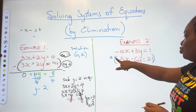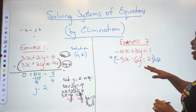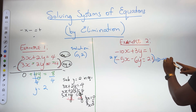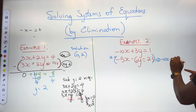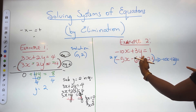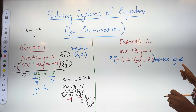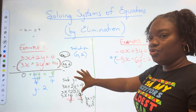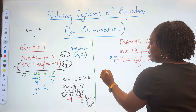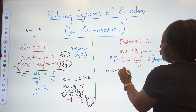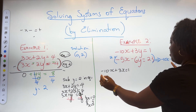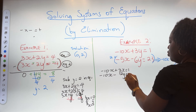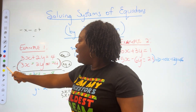I'm going to multiply the second equation by 2. So: 2 times negative 5x is negative 10x, 2 times negative 6y is negative 12y, and 2 times 23 is 46. Now I rewrite: equation one is negative 10x plus 3y equals 1, and the new equation two is negative 10x minus 12y equals 46.